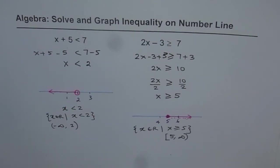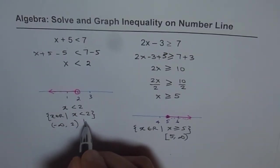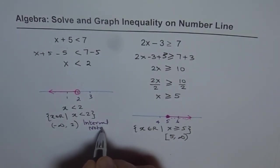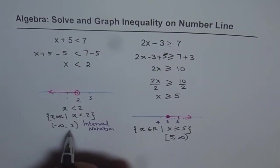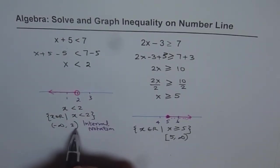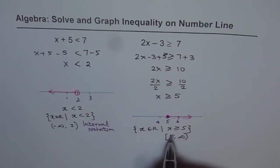So remember one thing. Whenever you are writing in interval notation, then on the left side, you have to write the lower number, from minus infinity to 2. And these brackets, which are open brackets, will be written for numbers not included. And the closed brackets will be used for numbers which are included. So remember that in mind.